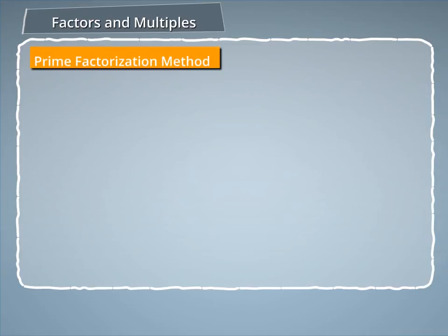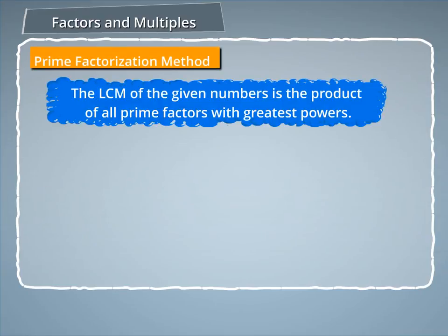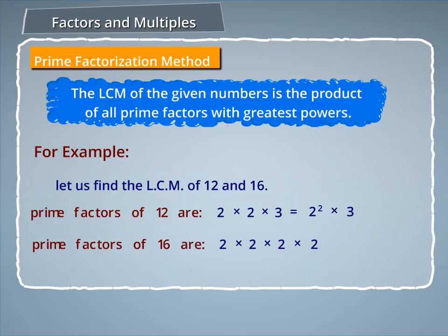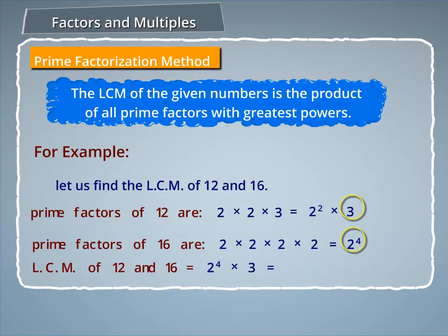Let us discuss LCM by the Prime Factorization Method. The LCM of given numbers is the product of all prime factors with their greatest powers. For example, the prime factors of 12 are 2² × 3, and the prime factors of 16 are 2⁴. The greatest powers are 2⁴ and 3, so the LCM of 12 and 16 is 2⁴ × 3 = 16 × 3 = 48.